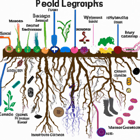Microbes are tiny organisms that play a vital role in soil fertility. There are various types of microbes that live in soil, such as bacteria, fungi, protozoa, and nematodes. Each type of microbe has a different function in the soil, contributing to its fertility. Microbes can help decompose organic matter, break down nutrients, and create a healthy balance of nutrients in the soil.